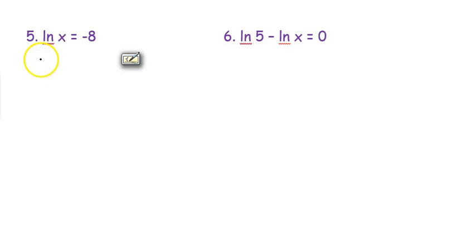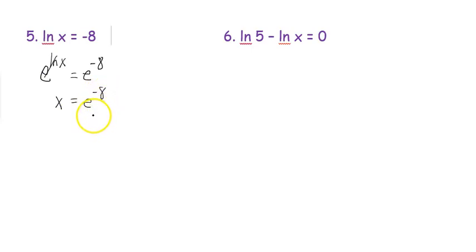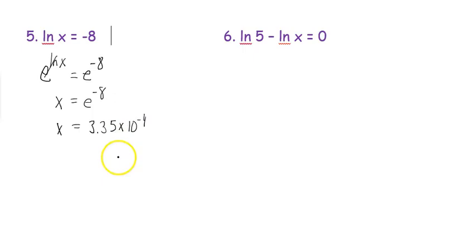Now moving on to log equations. We're trying to get x by itself, so we use the inverse of natural log, which is e — raising e to the power of each side. So e to the natural log of x equals e to the negative 8. The e and natural log cancel, giving x equals e to the negative 8. In multiple choice you might see this form, or 1 over e to the 8th, or the decimal 3.35 times 10 to the negative 4th — your calculator will show it in scientific notation.